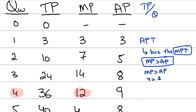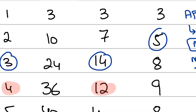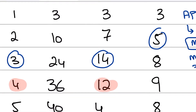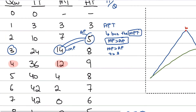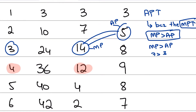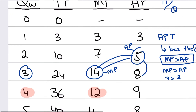When we hire the third worker, the marginal product is 14 while the average of two workers was 5. The extra contribution because of the third worker was 14, which was much greater than the average of 5. Since the marginal was greater than the average, it pulled the average up from 5 to 8.